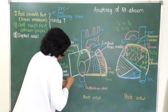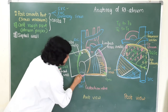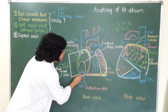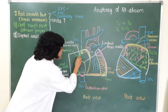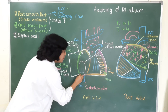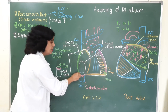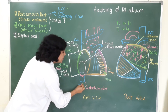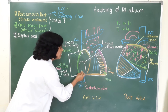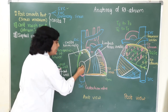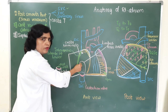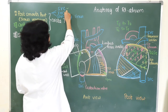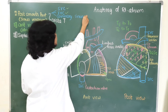The right horn of the eustachian valve is continuous with the lower end of the crista terminalis. In fetal life, this valve directs blood from the inferior vena cava into the left atrium through the foramen ovale.